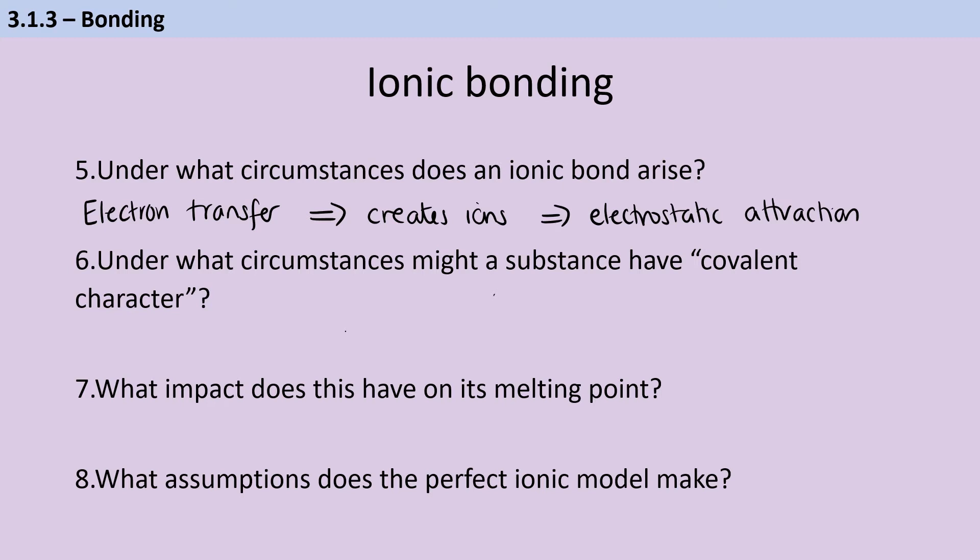A substance may have covalent character if those electrons are being more shared rather than polarized, so basically if there's not a sufficiently large difference in electronegativity between the cation and the anion. And this can occur for a few reasons. So the first one is if we have quite a small cation, and this is going to affect it because the smaller the cation, the more concentrated that positive charge is. So this increases the charge density.